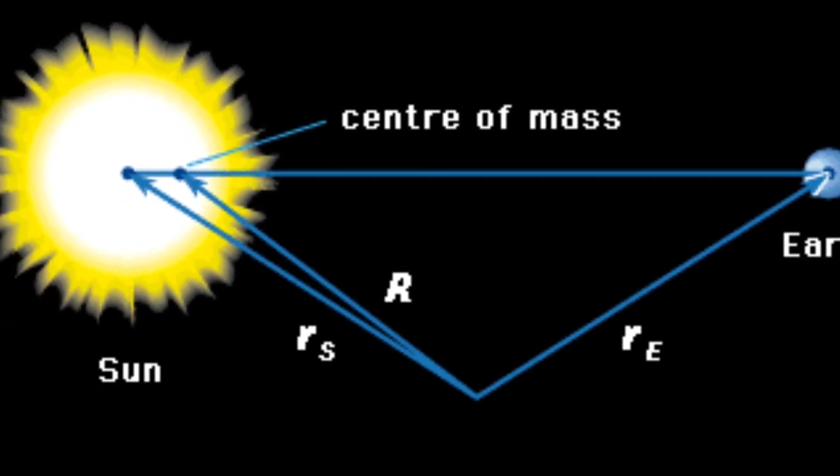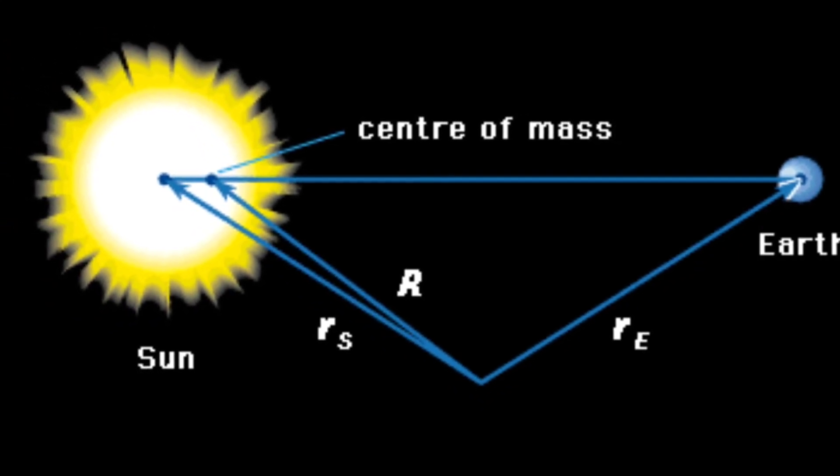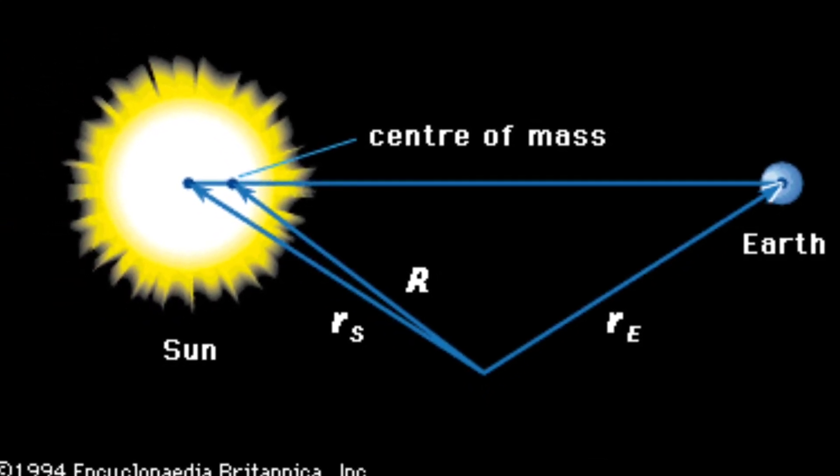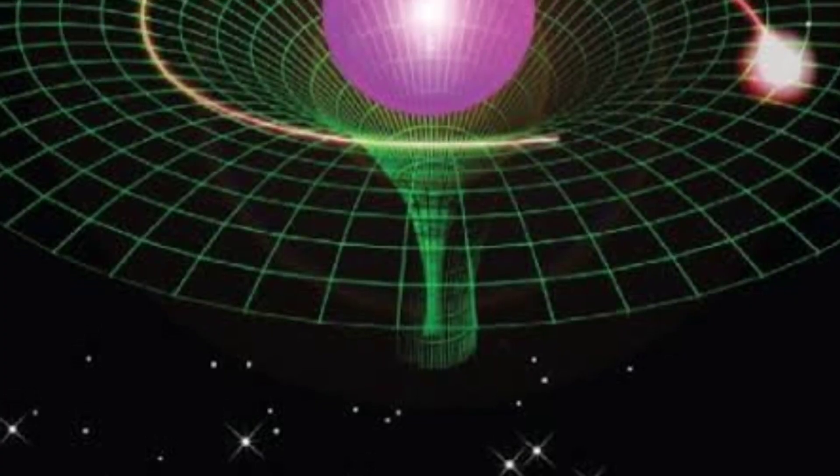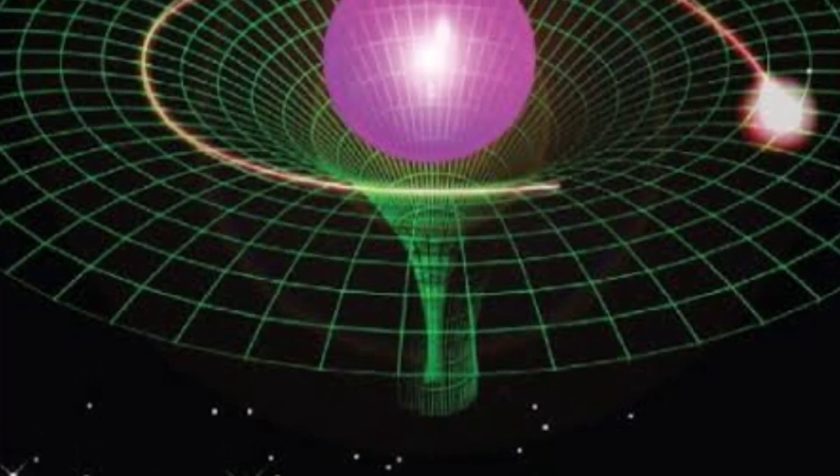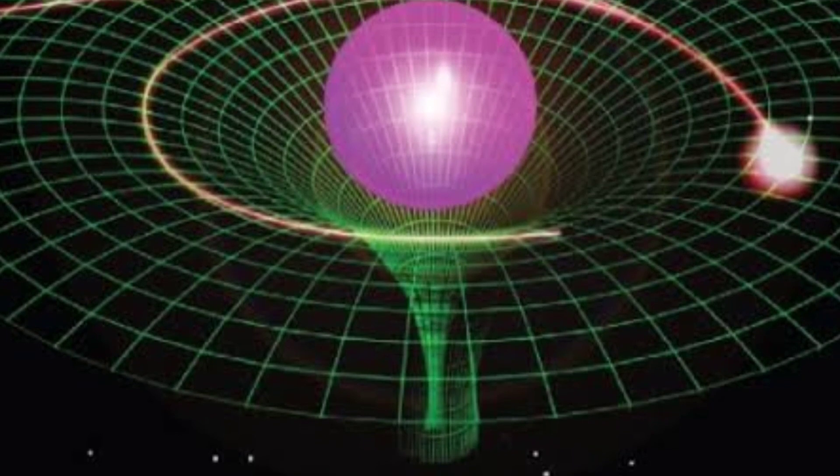In summary, while light has no mass, its interaction with gravity can be explained through the curvature of spacetime caused by the presence of energy, which includes the energy carried by light itself.